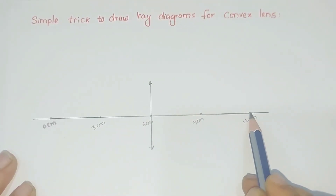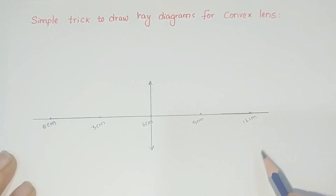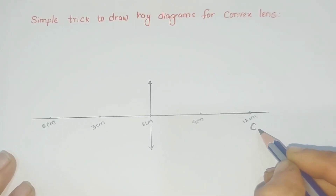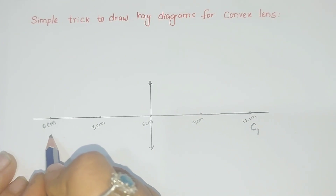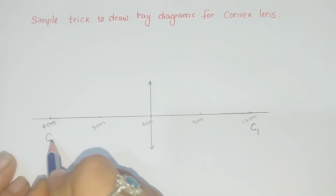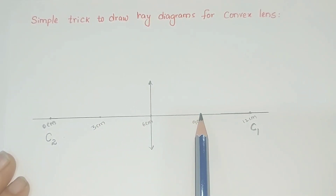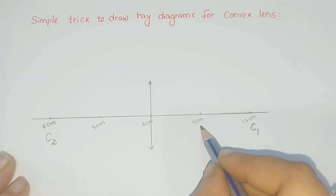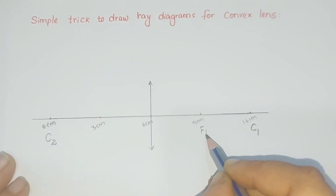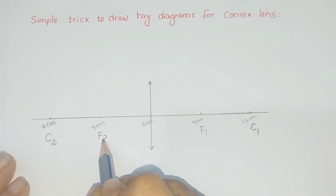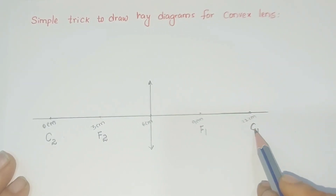The points at 0 centimeters and 12 centimeters represent the centers of curvature of the convex lens. The point at 12 centimeters on the right side represents C1, and on the left side represents C2. At 9 centimeters and 3 centimeters, these represent the focal points of the convex lens. At 9 centimeters we write F1, and at 3 centimeters we write F2, the second focal point.